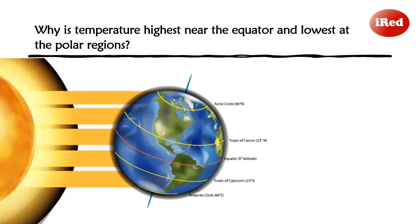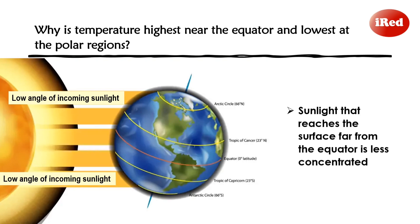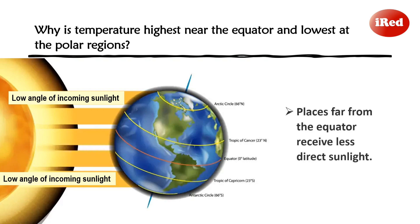While the places far from the equator are not hit vertically or at a lesser angle by the sun rays, causing these rays to spread on the surface in a large area. This makes the sunlight that reaches the surface to be less concentrated. Thus, places far from the equator receive less direct sunlight.